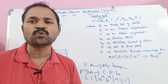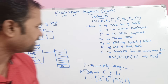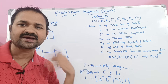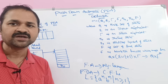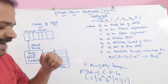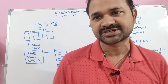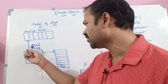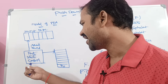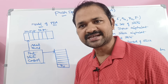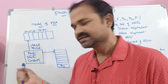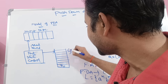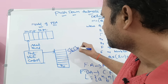Now let us see the model for pushdown automata — the pushdown automata diagram. Pushdown automata mainly contains three components. The first component is input tape. The second component is finite state control, which is nothing but a finite control machine — that is, finite automata. And the third component is stack.